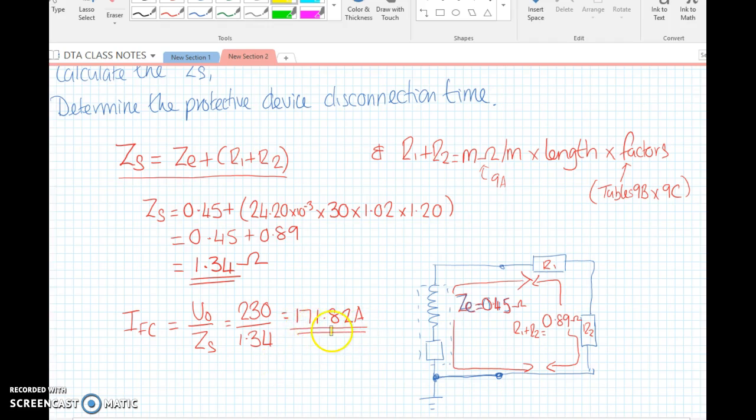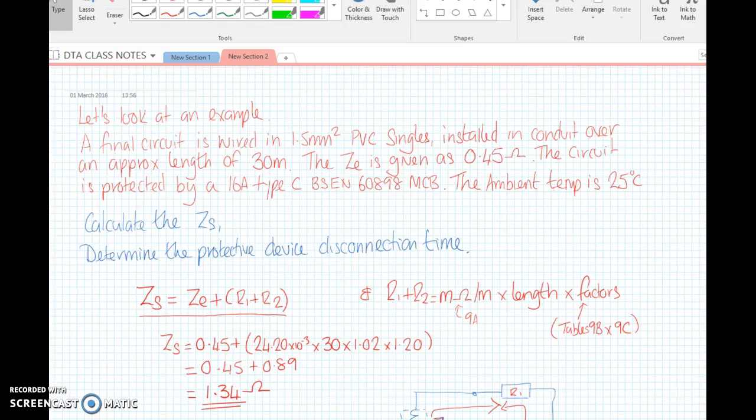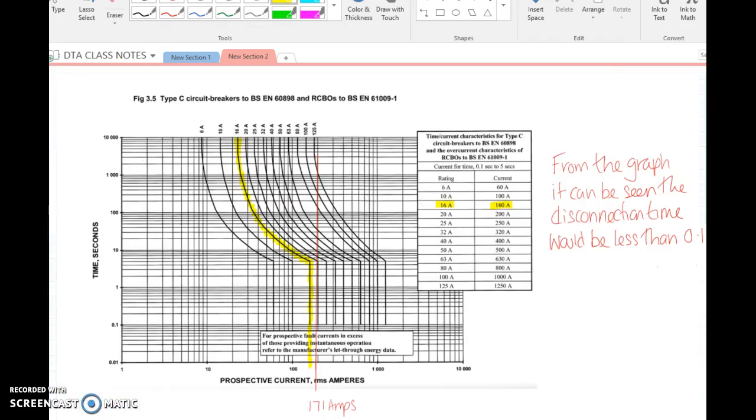That's our ZS 1.34, so now we need to work out our fault current. I've done a sketch of our circuit: we have a ZE of 0.45 which we're given, and our R1 R2 is 0.89 that runs through here. The next thing to look at is the actual protective device. The brief tells us it's a 16 amp type C 60898, so I've gone through our regulations and found this table.